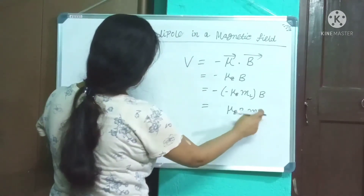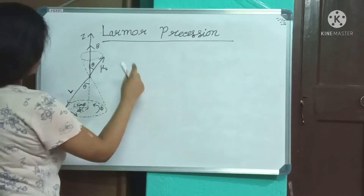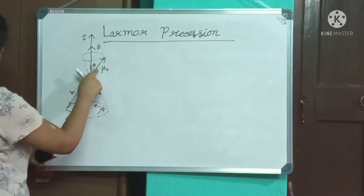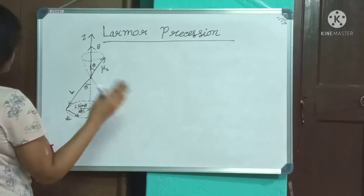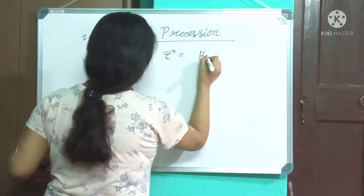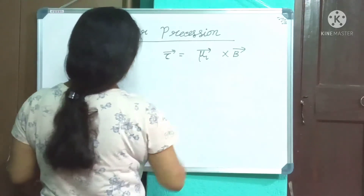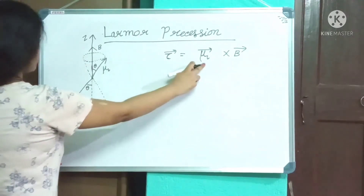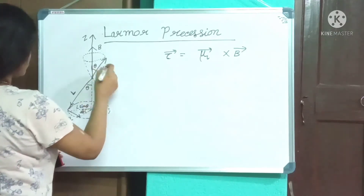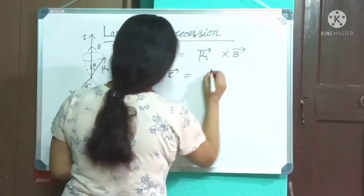V is the energy of interaction between the magnetic field and the magnetic moment. If a dipole of magnetic moment μ is placed in an external magnetic field B, it acquires potential energy V equals minus μ·B, and classically it experiences a torque τ equals μ_L × B. Since μ_L and L are antiparallel, τ is perpendicular to both B and μ_L.